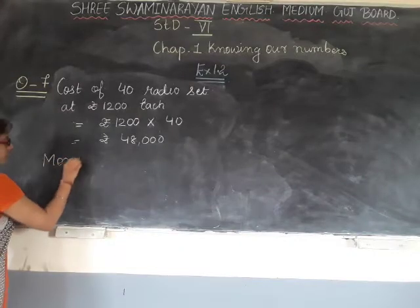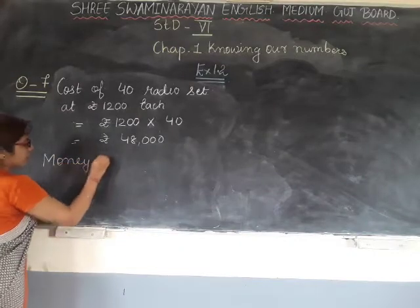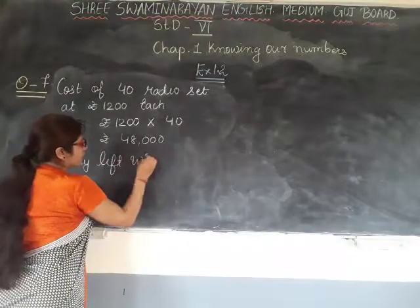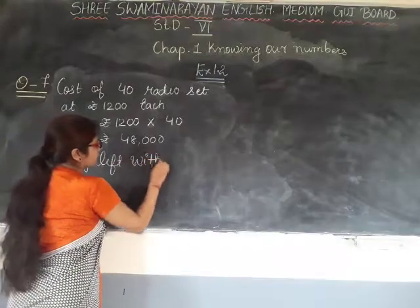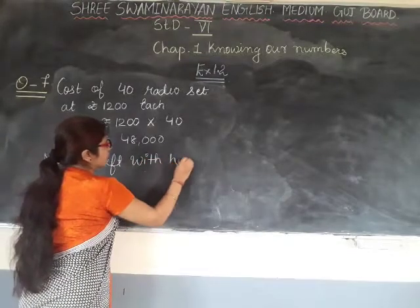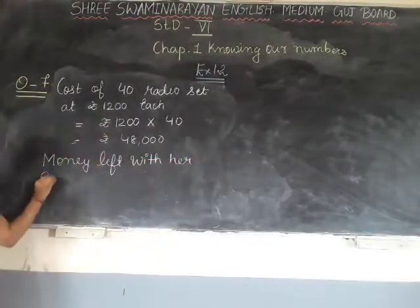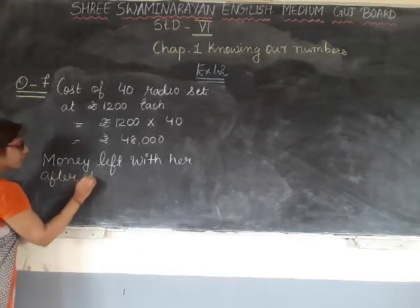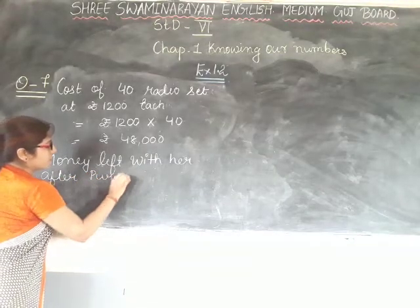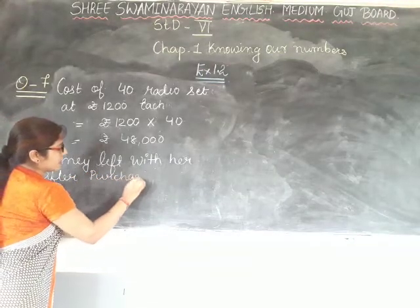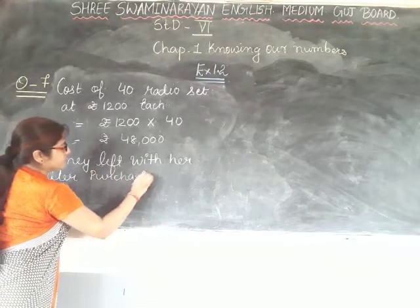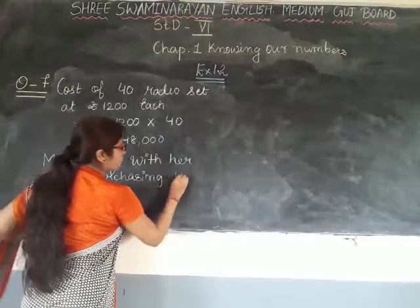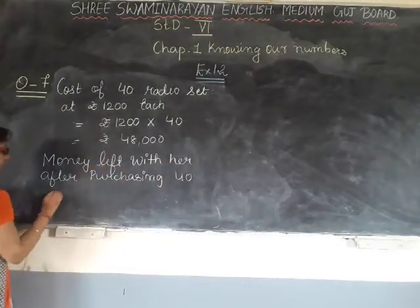Now, money left with her after purchasing the radio sets. So, money will be left with her after purchasing a radio set — we subtract 48,000 from 78,592.